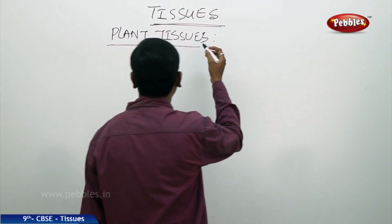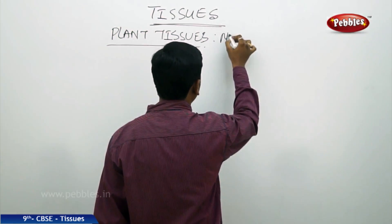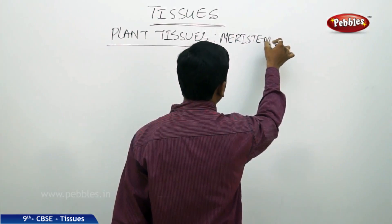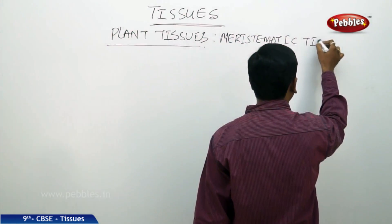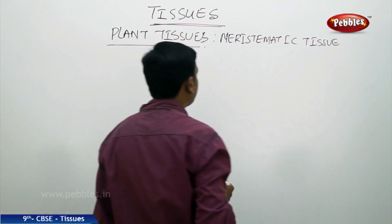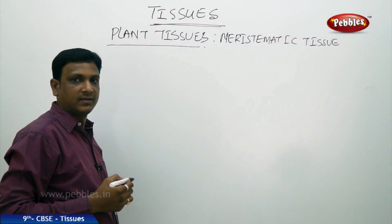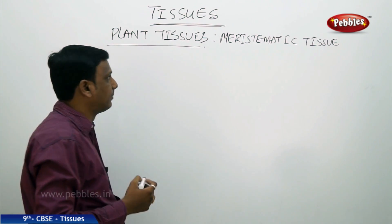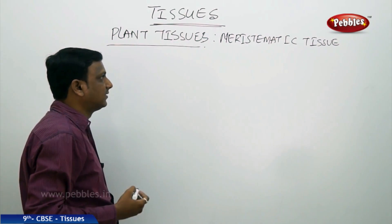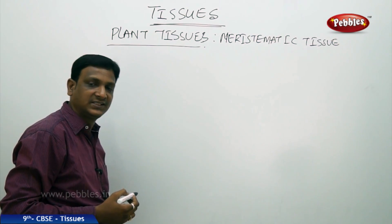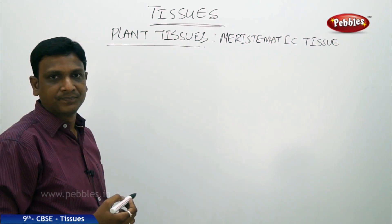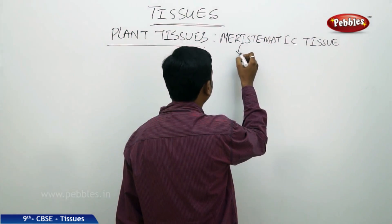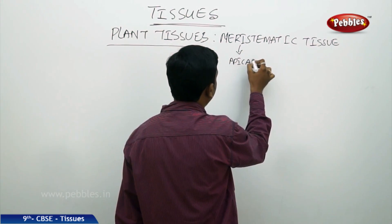The first plant tissue we are going to study is the meristematic tissue. These are the actively growing tissues of a plant. Meristematic tissues are of three different types: apical meristem, lateral meristem, and intercalary meristem.